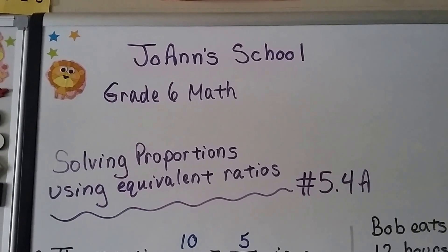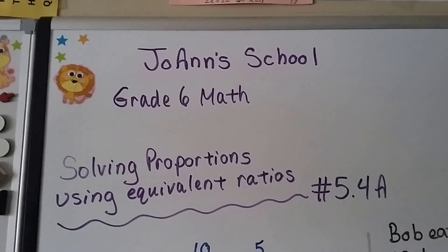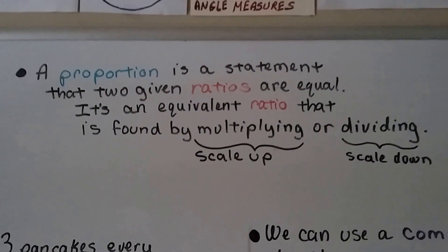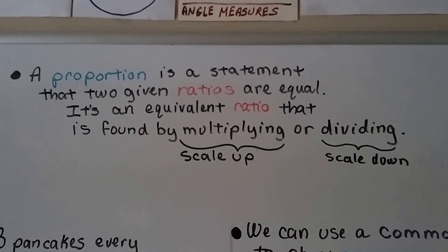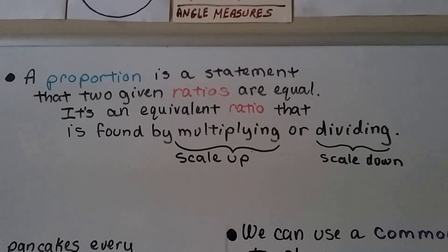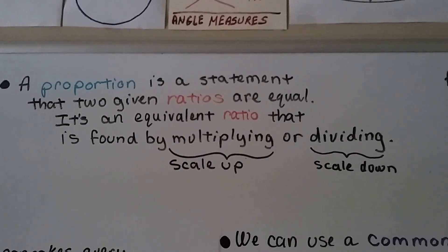This is a new version of video 5.4 for grade 6 math about solving proportions and using equivalent ratios. A proportion is a statement that two given ratios are equal to each other, and it's an equivalent ratio that is found by multiplying or dividing. When we multiply, we scale it up, and when we divide, we scale it down.